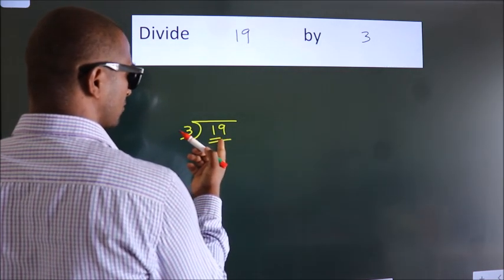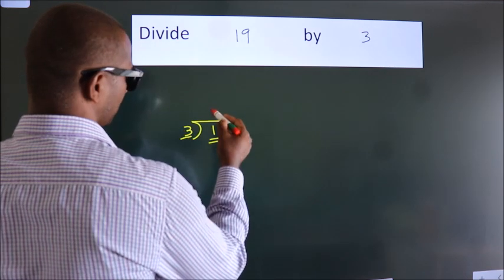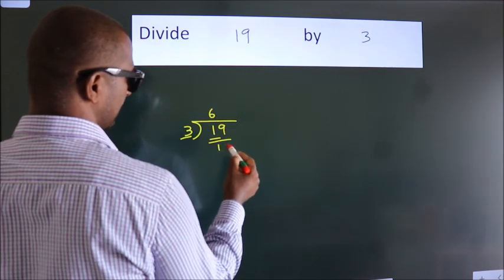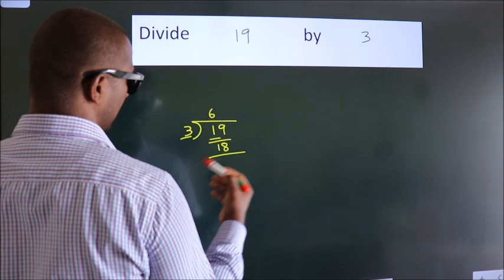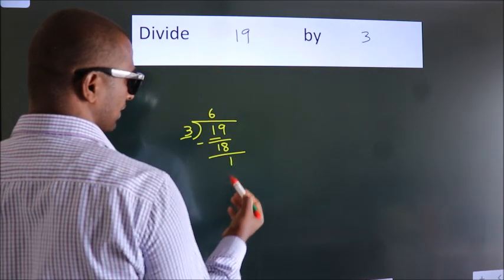A number close to 19 in 3 table is 3, 6, 18. Now we should subtract. We get 1.